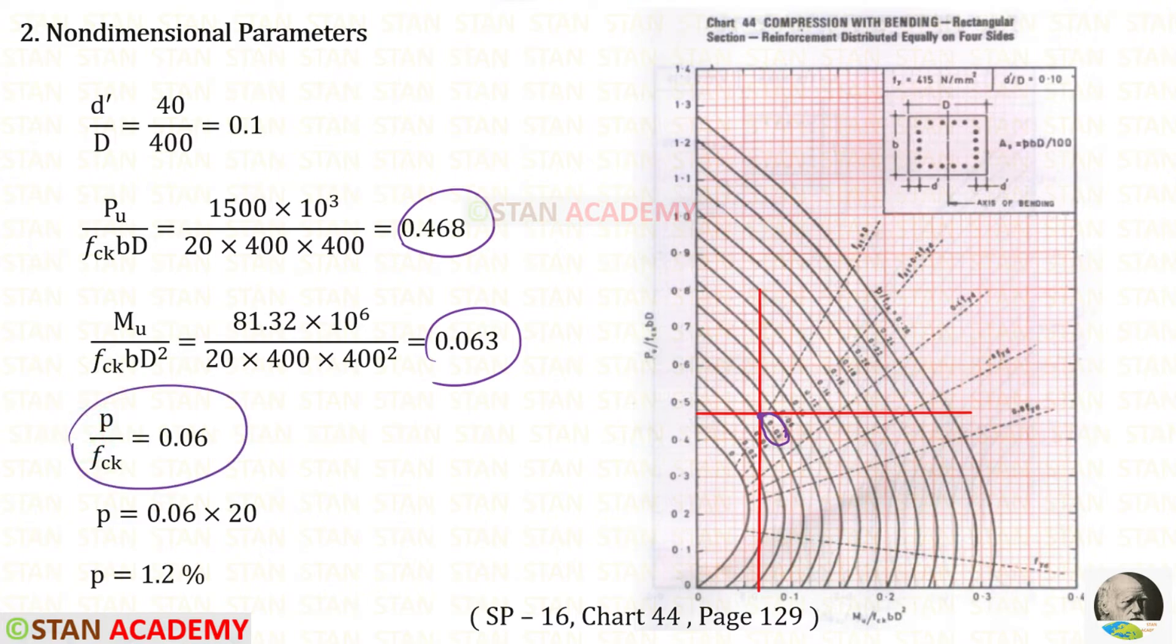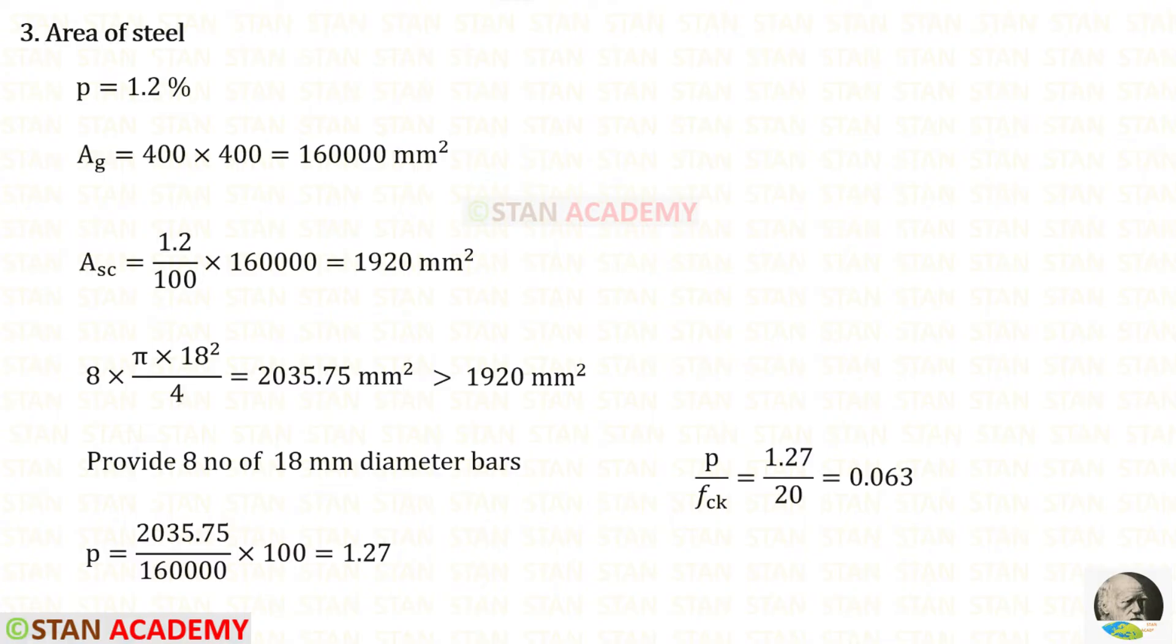We know the value of FCK is 20. So for P, we will get 1.2 percent. For the percent of steel, we have got 1.2.